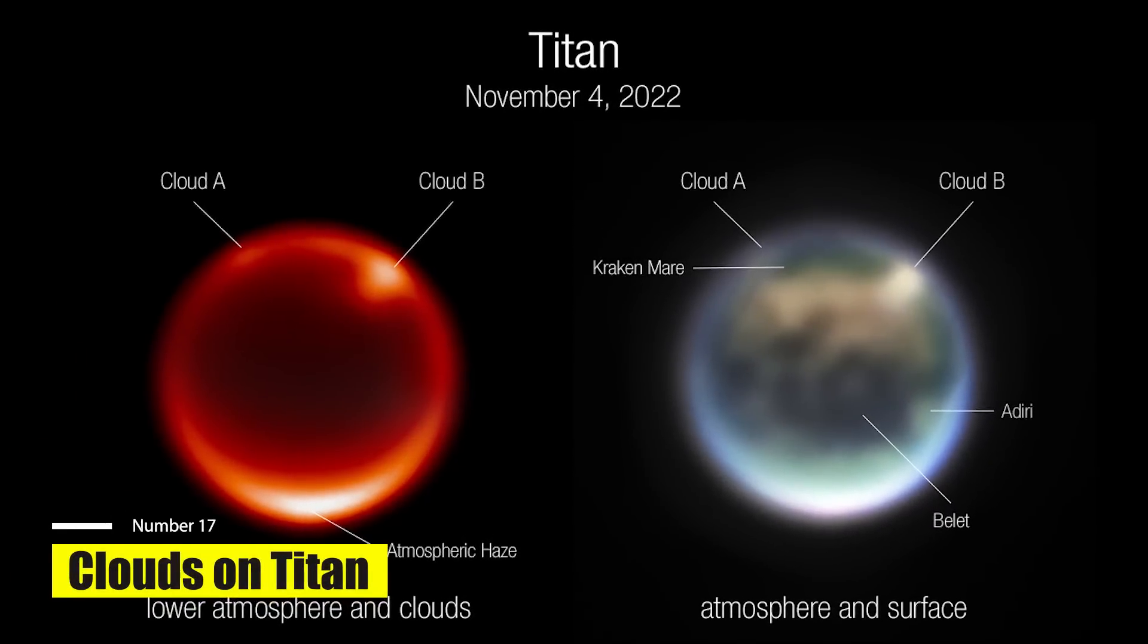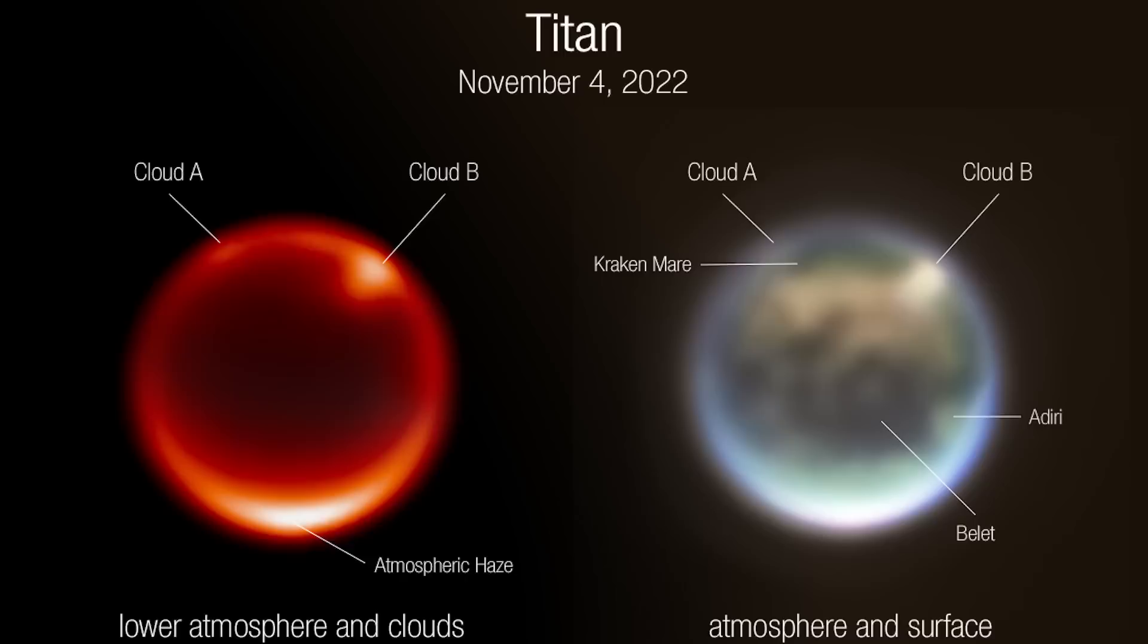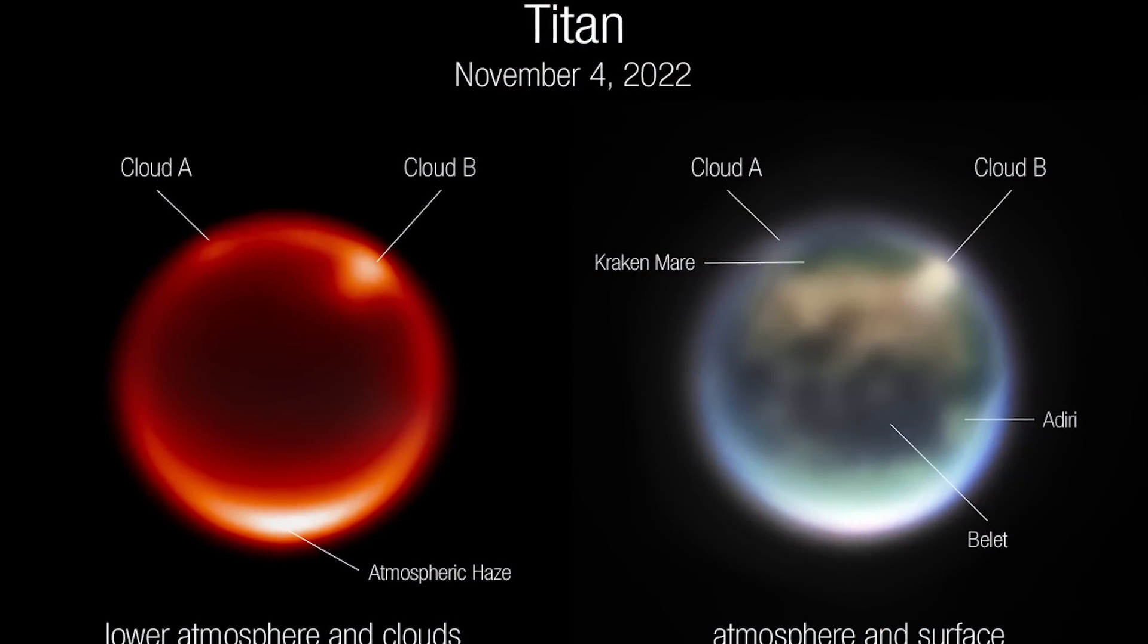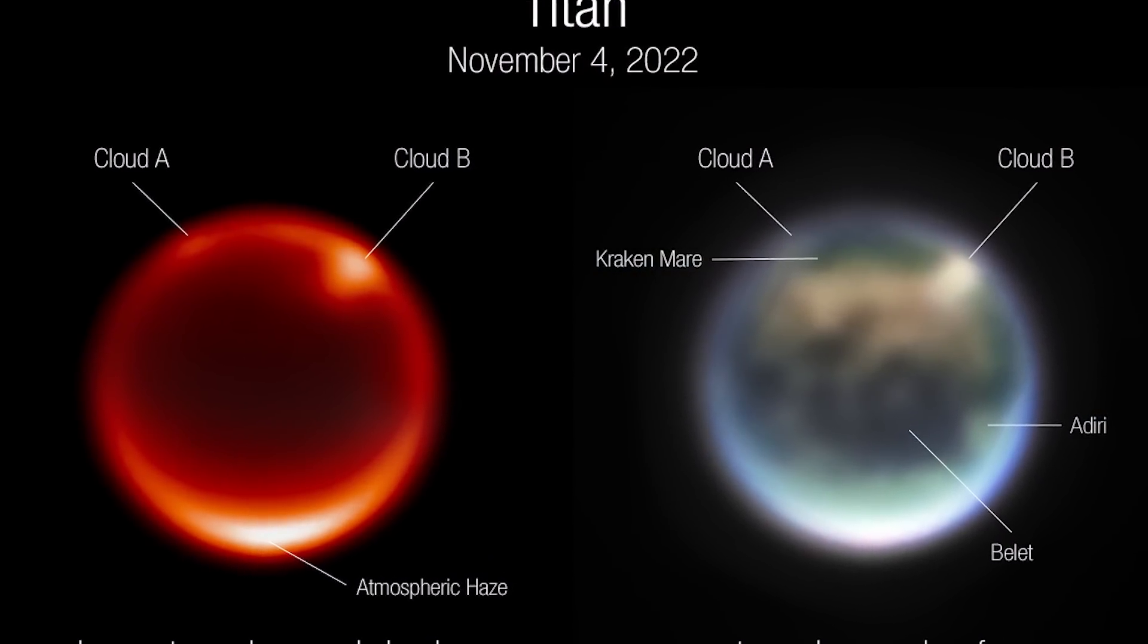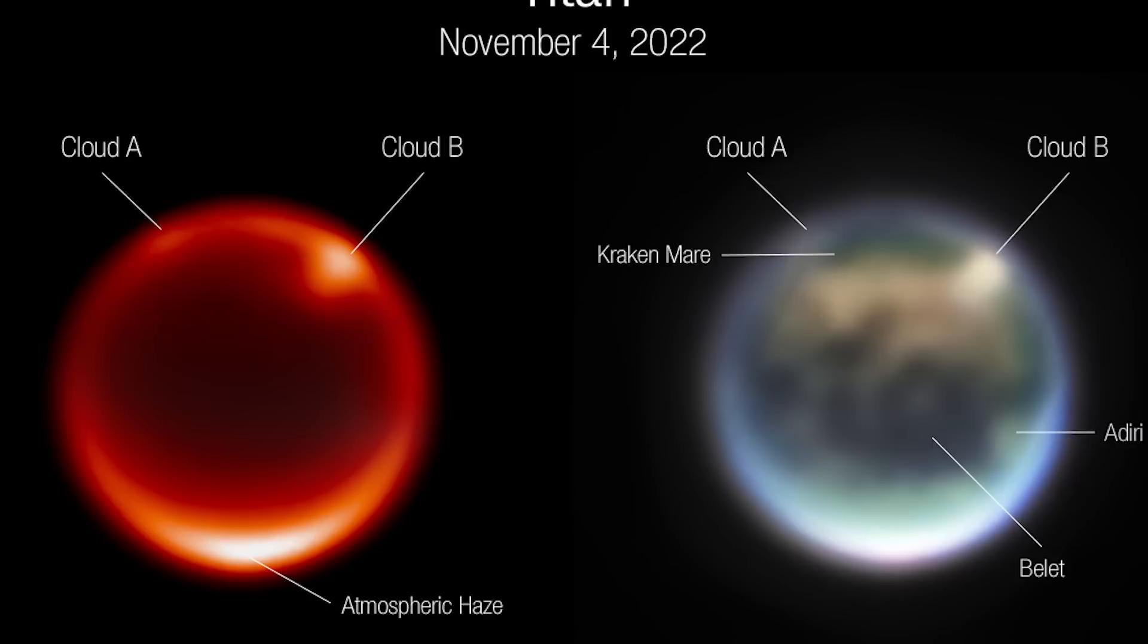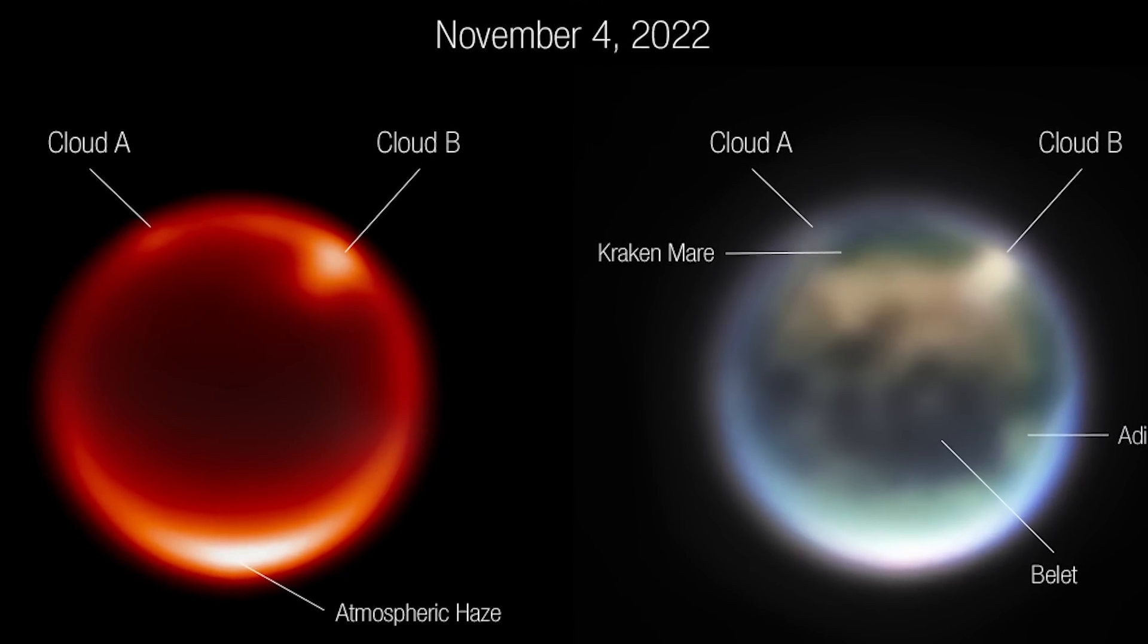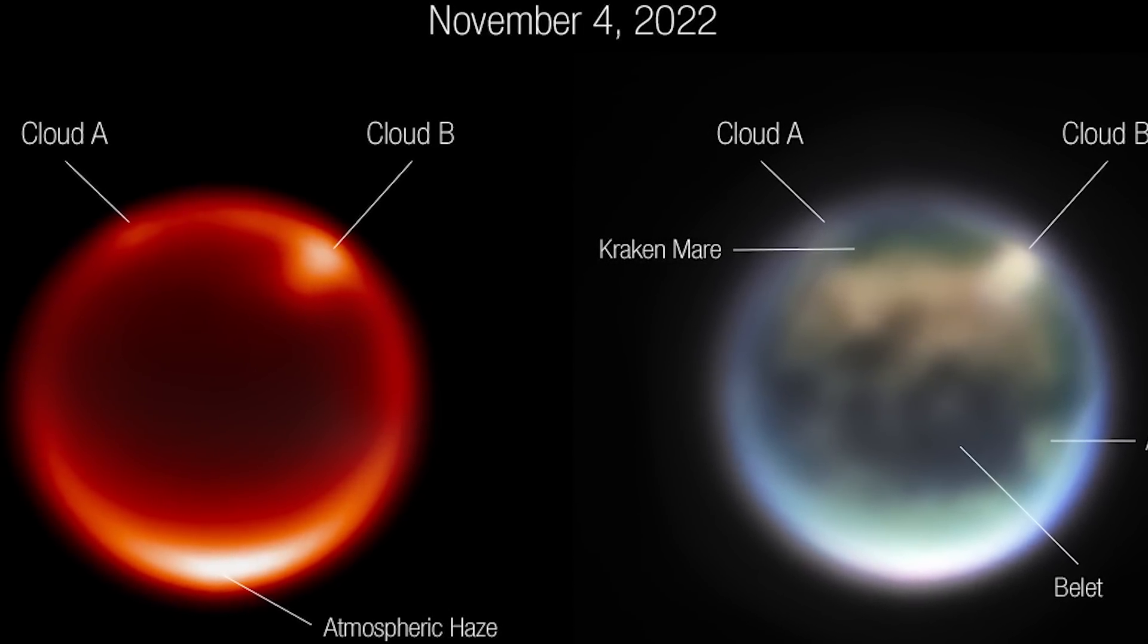Clouds on Titan. On Saturday, November 5th, a group of planetary scientists from around the world awoke to the exciting news that the first web photographs of Saturn's largest moon, Titan, had been released. Conor Nixon, the Guaranteed Time Observations principal investigator, and the rest of the web team members who are studying Titan's environment and atmosphere, shared their initial impressions of the findings. Titan has a rich atmosphere and is the only moon in the solar system with running liquid other than on Earth.